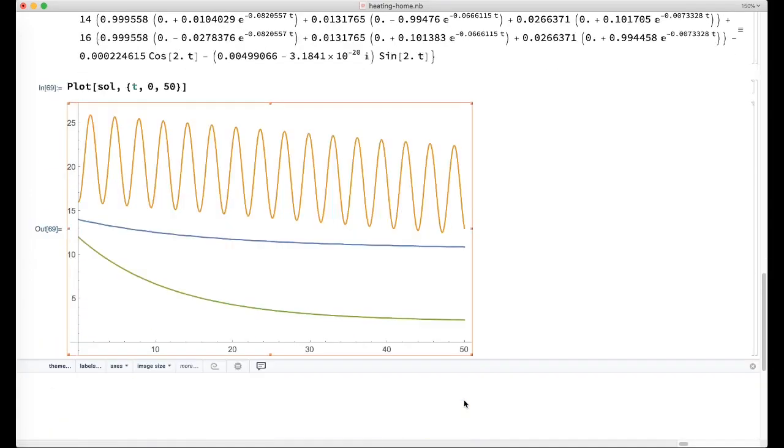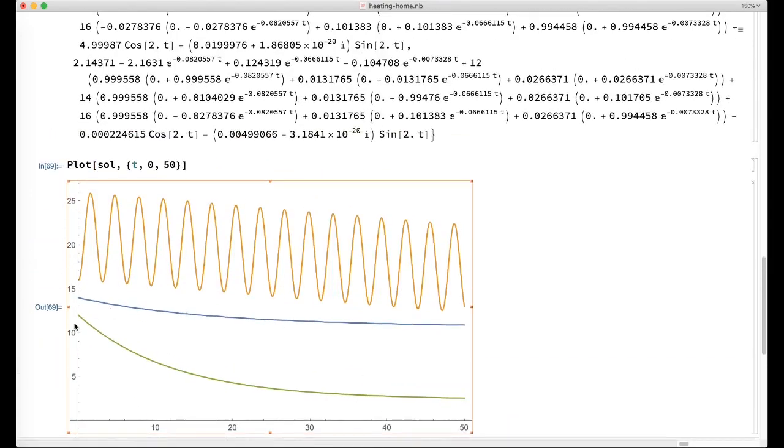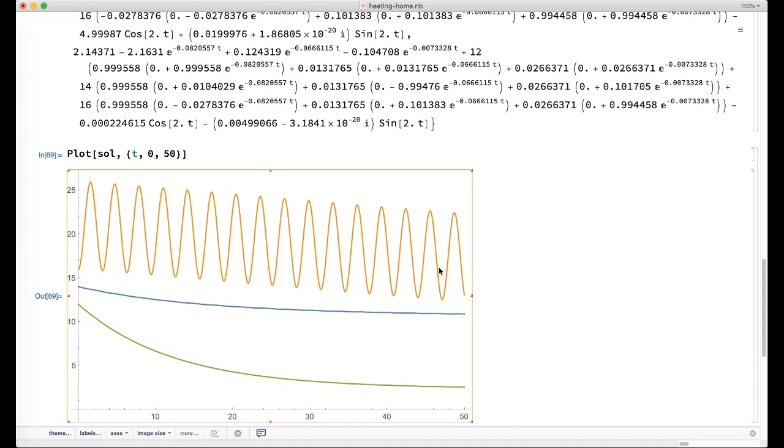All right. So you see that over time, the basement and attic are getting comparable to the outside temperatures, and that's dragging down the interior temperatures. So the details of this model are not that important. It's just to show that this is possible.